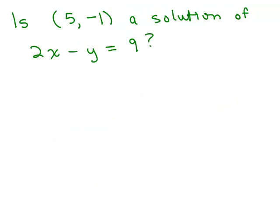Here's one more for you to try on your own. Is (5, negative 1) a solution of 2x minus y equals 9? Put the video on pause and try it. So let's plug in. What are we going to plug in for x? 5. And here's the tricky part. Minus. And what are we plugging in for y? Negative 1. Don't just put minus 1. Put minus negative 1. And the question is, is this true?